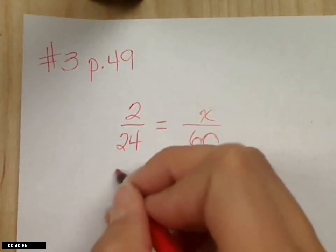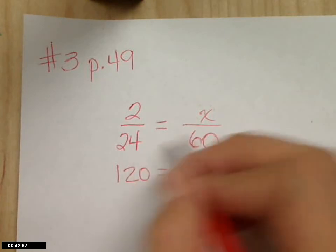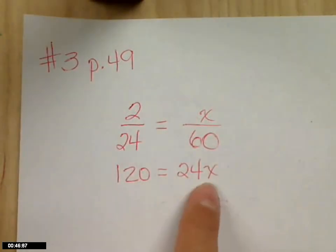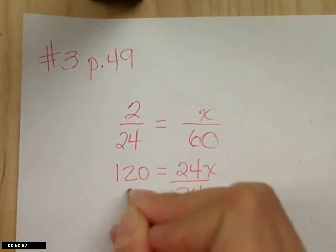Cross multiply. Two times sixty is one twenty, twenty-four times x is twenty-four x. And at this point, you want to divide by twenty-four on both sides.